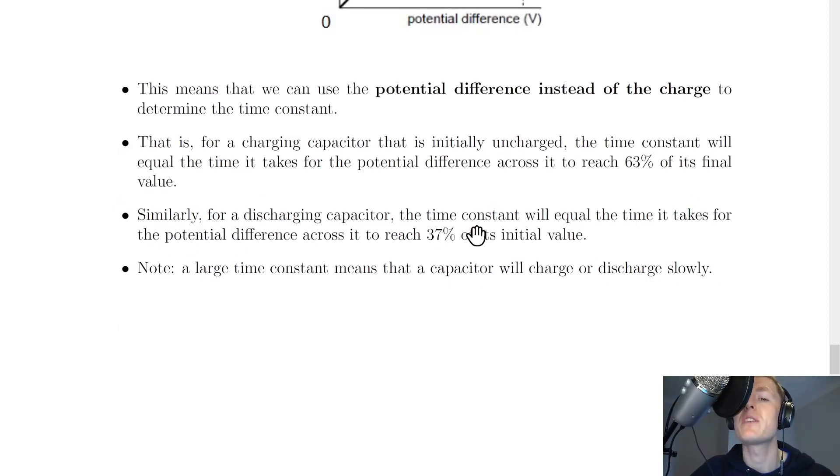Similarly, for a discharging capacitor, the time constant will equal the time it takes for the potential difference across it to reach 37% of its initial value.